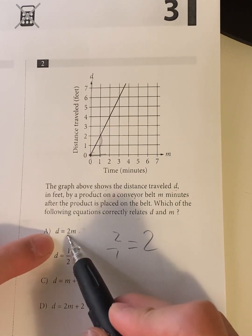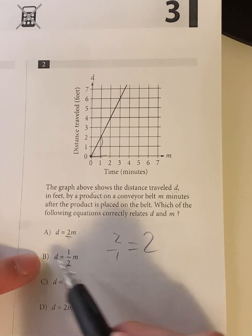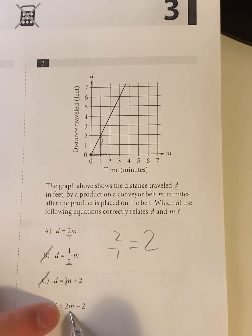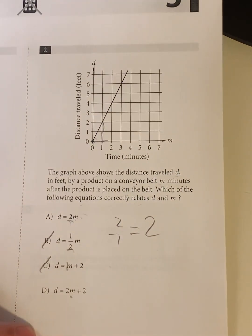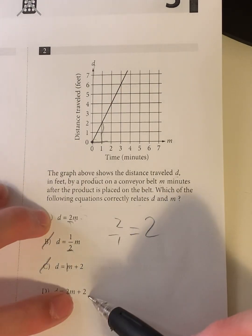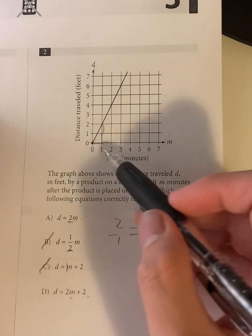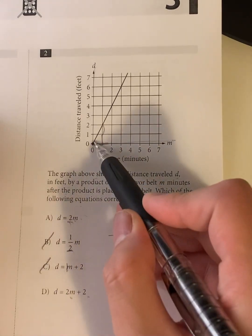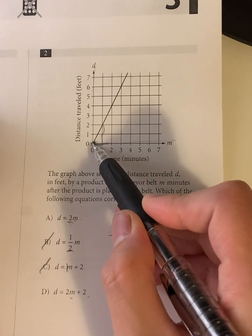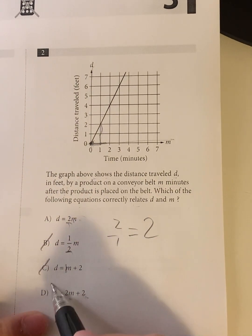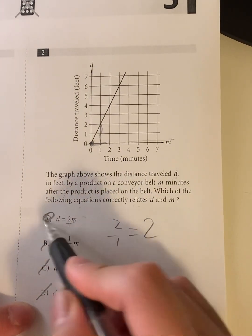Well, looking at this, the slope for this is 2. For this, 1 half, so that's out. For this is 1, so that's out. This one has a slope of 2. So what's the difference between A and D? The difference is the y-intercept. So where's the y-intercept? It's basically where the x value is 0. So the x value of 0 is right here. What's the y value? It's also 0. So it means there's no y-intercept. So this one has a y-intercept of 2. It's out. So your answer should be A.